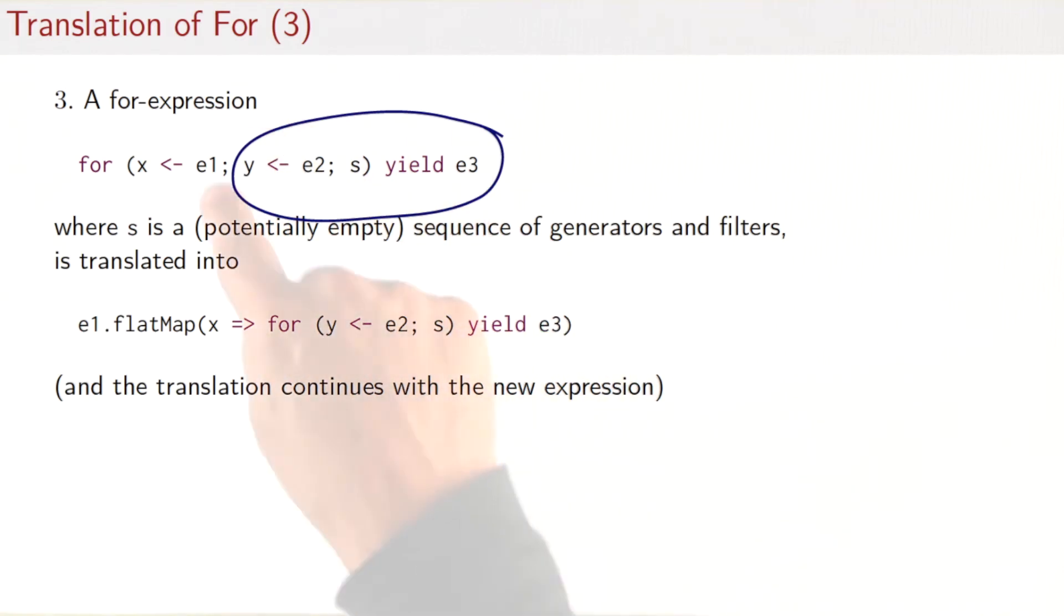And what we need to do is we need to take everything that comes out of this for expression and flatMap it. That means concatenate it all into the result list. That's precisely what happens here. So we do an e1.flatMap with a function that takes an x and gives us back a for expression that has now one fewer generator.